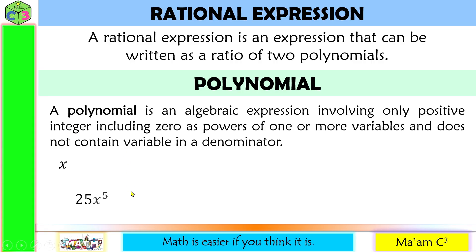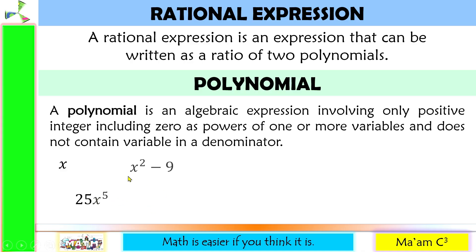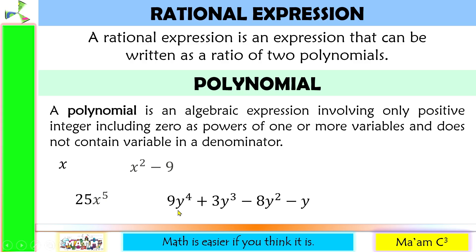Let's have another example: 25x to the fifth power. This is also a polynomial — a combination of a constant and a variable raised to a positive integer. Let's have x squared minus 9. This is a polynomial; it is a binomial in particular because there are two terms. Let's have a longer one. Examine the exponents here — these are all positive integers, so this is a polynomial.